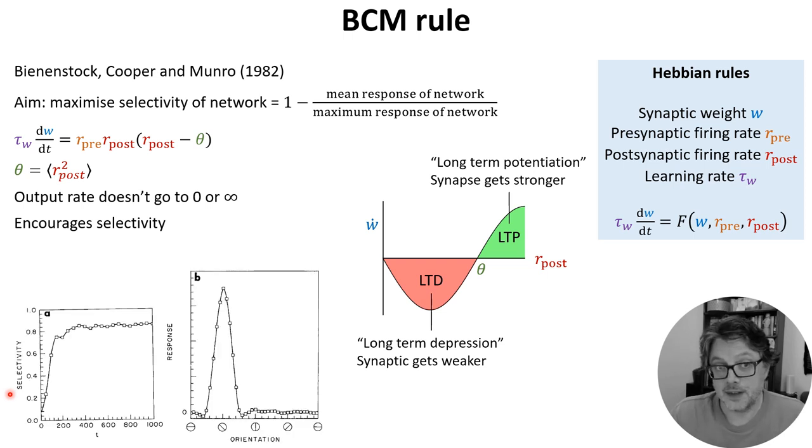And sure enough, you can see that this is happening in their model of orientation selectivity in the visual cortex. Over time, the selectivity of the networks increases, and the end result is a network with a strong preference for just one particular orientation. And this qualitatively matches what happens in development. Incidentally, you might wonder, why do we take the square of the firing rate? Well, the exact choice of taking the square isn't essential. It's only important that it be nonlinear, and we're not going to go into the reasons why that's important.